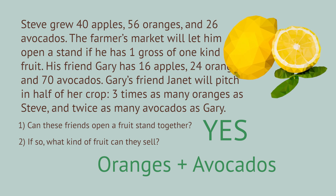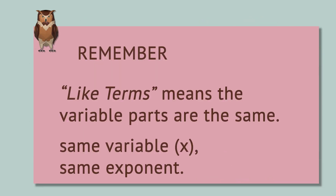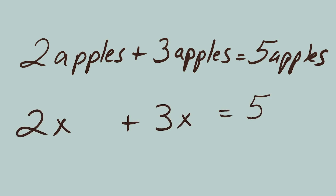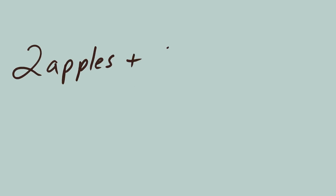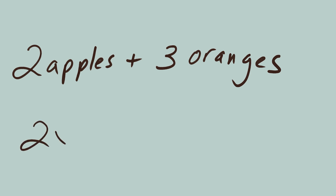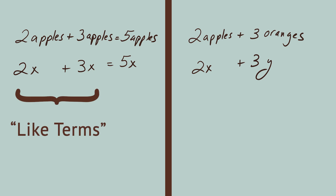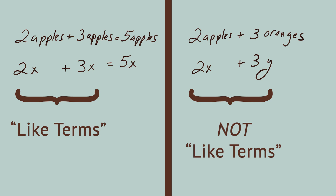One that sells oranges, and one that sells avocados. They need to get another friend who grows lemons so they could make guacamole. By solving this puzzle, we're really thinking about the importance of like terms in algebra. When you begin simplifying algebraic expressions and equations, you can combine terms that have the same variable parts. For instance, you can combine two apples and three apples to get five apples. Similarly, in an algebraic equation, you can combine 2x and 3x to get 5x, but you can't combine two apples and three oranges to get five apples. Similarly, you can't combine 2x plus 3y to get 5x. In this example, 2x and 3x are like terms — their variable parts are the same — but 2x and 3y are not like terms; their variable parts are different.